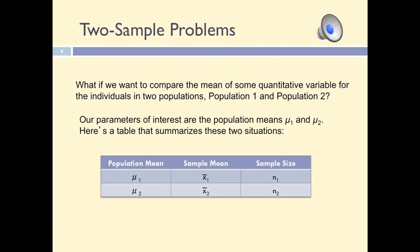This could be the case when we want to see if a certain variable, like test scores on a certain subject area, are significantly different between males and females. In such a situation we must randomly select a group of females and then randomly select a group of males. We have two groups and they come from two separate populations: the population of females and the population of males.